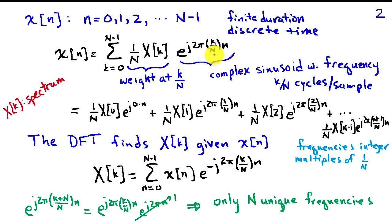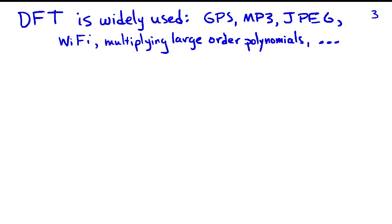There are only N unique frequencies because discrete time sinusoids with frequencies shifted by 1 cycle per sample are identical. A sinusoid with frequency k over N and one with frequency k over N plus 1 — distributing 2 pi and n over those parentheses gives e to the j 2 pi k over N times n, times e to the j 2 pi n, which is always 1. So there are only N unique frequencies that are integer multiples of 1 over N. In contrast, a Fourier series for continuous time signals has infinitely many terms. Both DFT expressions have a finite number of terms, so the DFT is ideally suited for computation.